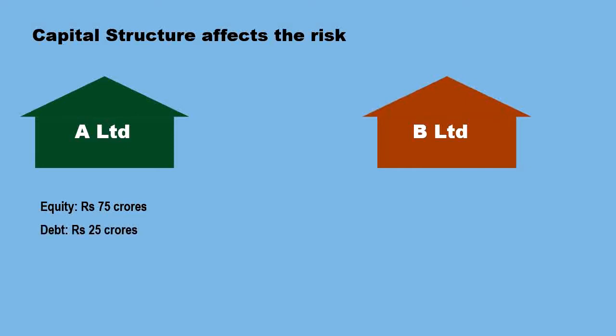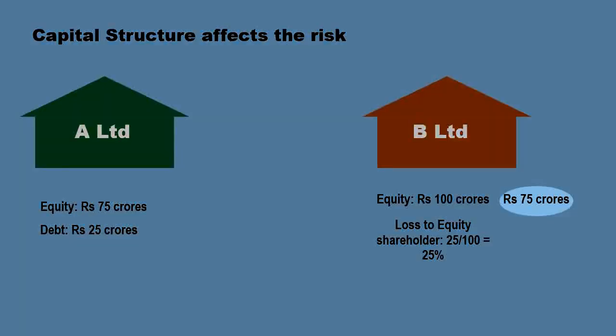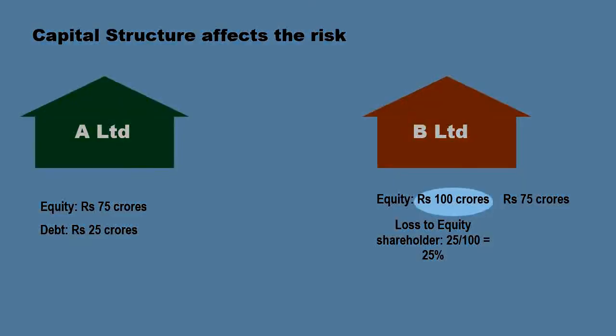Company B, on the other hand, is funded purely through equity — there is no debt in company B. Now let us presume that both companies go into liquidation and the assets realize only 75 crores. In the case of B Limited, the entire 75 crores will be distributed to the shareholders against their dues of 100 crores, which means the shareholders of B Limited have lost 25 crores out of their investment of 100 crores — so they have lost 25% of their equity.